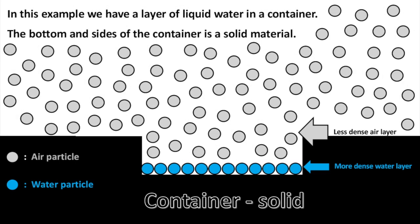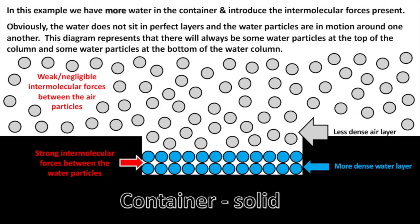In this example, we have a layer of liquid water in a container. The bottom and sides of the container is a solid material. Above the water we have the less dense air layer, and below the water is the container, which is solid. We have more water in the container and introduce the intermolecular forces present. The water does not sit in perfect layers and the water particles are in motion around one another. This diagram represents that there will always be some water particles at the top of the column and some at the bottom. Weak or negligible intermolecular forces exist between the air particles, and strong intermolecular forces between the water particles, with the more dense water layer at the bottom and less dense air layer above.